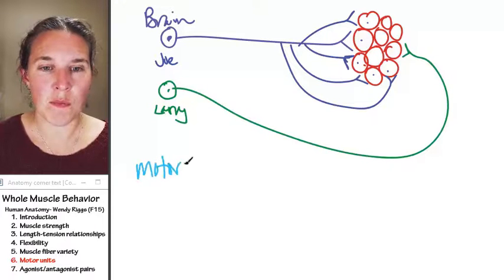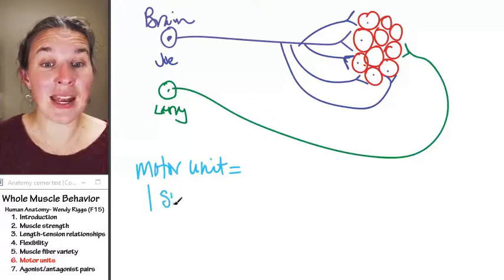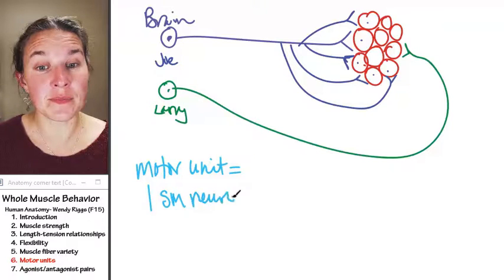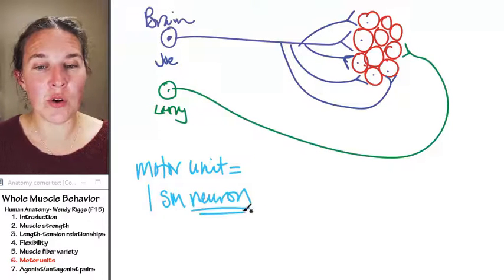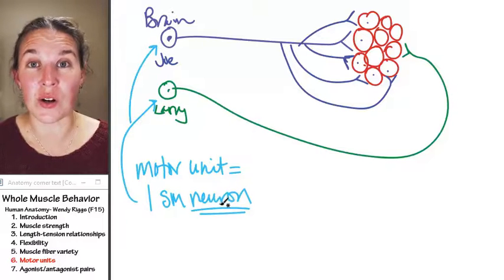The motor unit equals one somatic motor neuron, and the somatic motor neuron is that. There's one. Joe and Larry are somatic motor neurons.